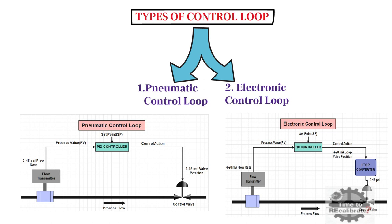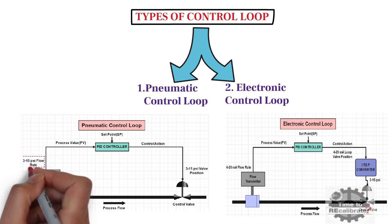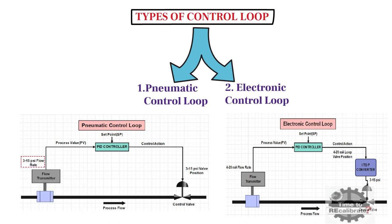In pneumatic control loop, flow transmitter gives 3 to 15 pounds per square inch signal to PID controller. PID controller compares this signal with setpoint and sends the signal to control valve in 3 to 15 pounds per square inch form.